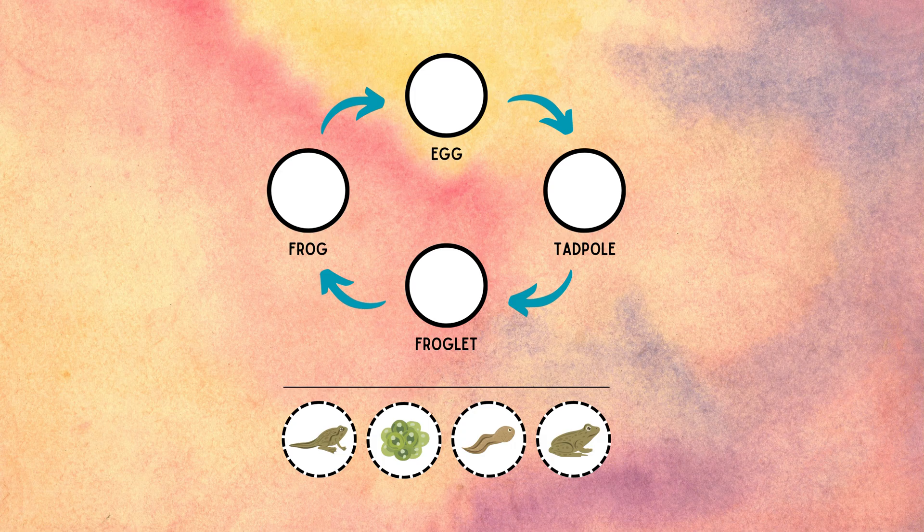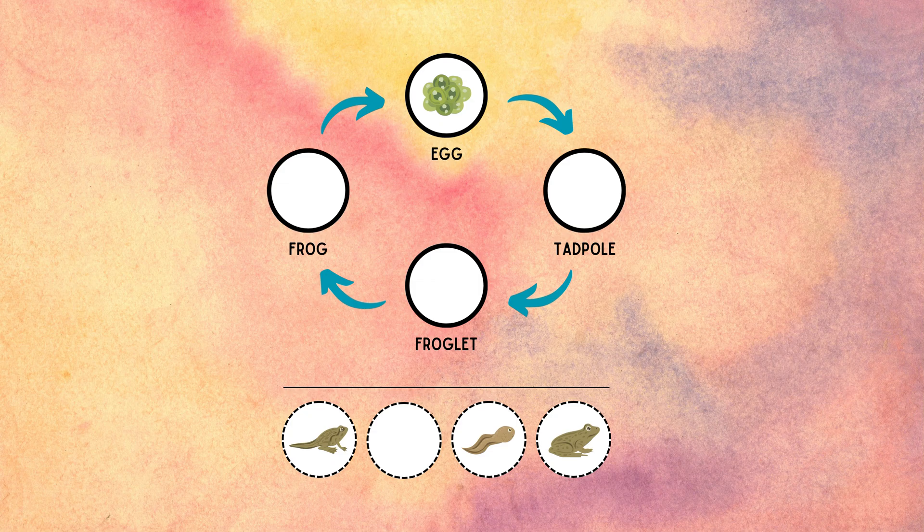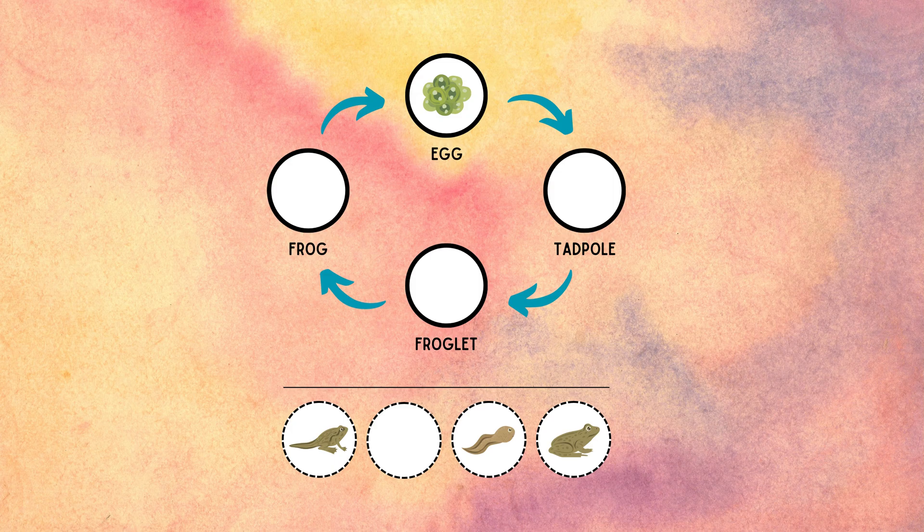The life cycle begins when a female frog lays eggs in water. These eggs are usually laid in large clusters or masses and are covered in a jelly-like substance to protect them from predators. Once the eggs are laid, they hatch into tadpoles.